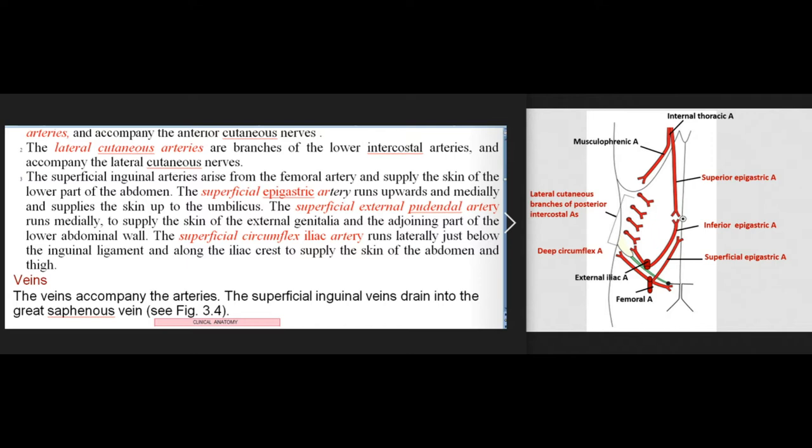Cutaneous arteries. The anterior cutaneous arteries are branches of the superior and inferior epigastric arteries, and accompany the anterior cutaneous nerves. The lateral cutaneous arteries are branches of the lower intercostal arteries and accompany the lateral cutaneous nerves. The superficial inguinal arteries arise from the femoral artery and supply the skin of the lower part of the abdomen. The superficial epigastric artery runs upwards and medially and supplies the skin up to the umbilicus. The superficial external pudendal artery runs medially to supply the skin of the external genitalia and the adjoining part of the lower abdominal wall. The superficial circumflex iliac artery runs laterally just below the inguinal ligament and along the iliac crest to supply the skin of the abdomen and thigh.